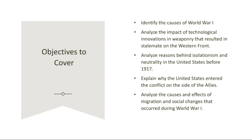Despite these efforts to stay out of the war, several factors pushed the U.S. to enter the conflict on the side of the Allies. German unrestricted submarine warfare, which targeted American ships and civilians, culminated in the sinking of the Lusitania and other incidents that inflamed public opinion. Additionally, the revelation of the Zimmermann Telegram, in which Germany sought a military alliance with Mexico against the U.S., further galvanized American support for intervention.